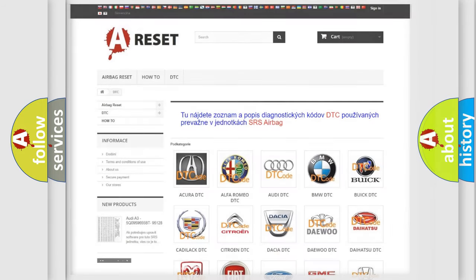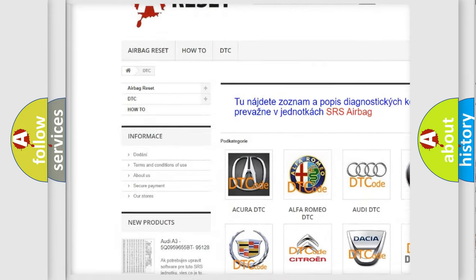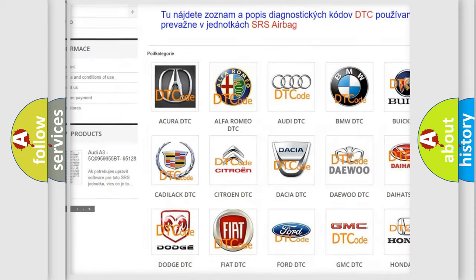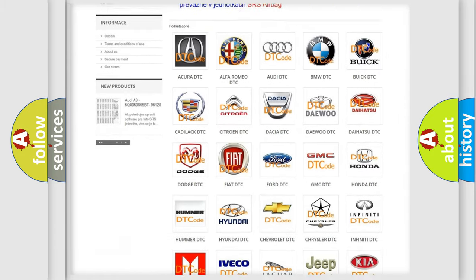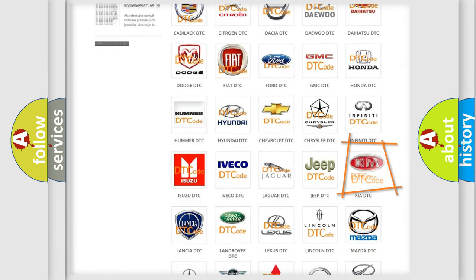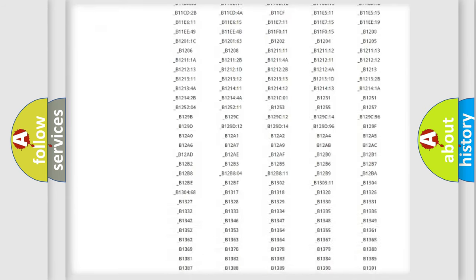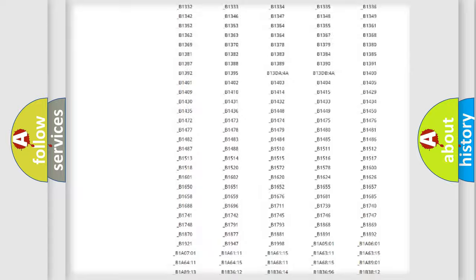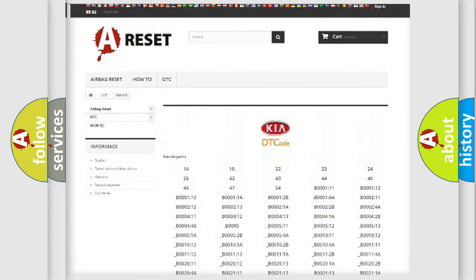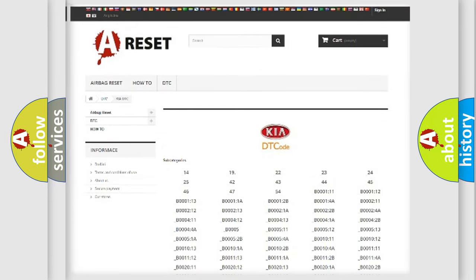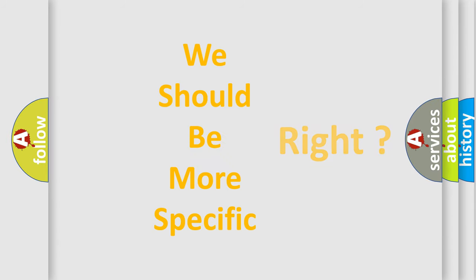Our website airbagreset.sk produces useful videos for you. You do not have to go through the OBD2 protocol anymore to know how to troubleshoot any car breakdown. You will find all the diagnostic codes that can be diagnosed in KIA vehicles, and many other useful things. The following demonstration will help you look into the world of software for car control units.